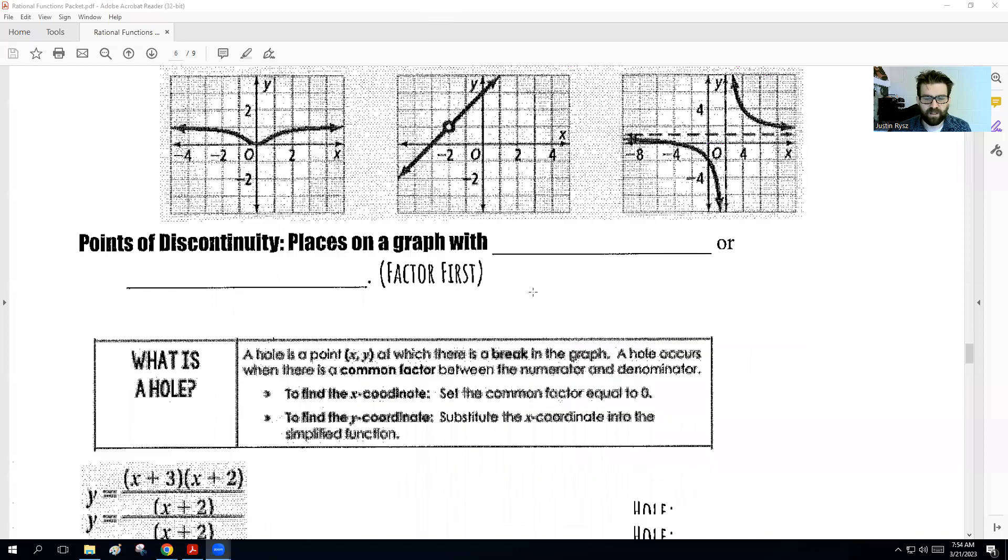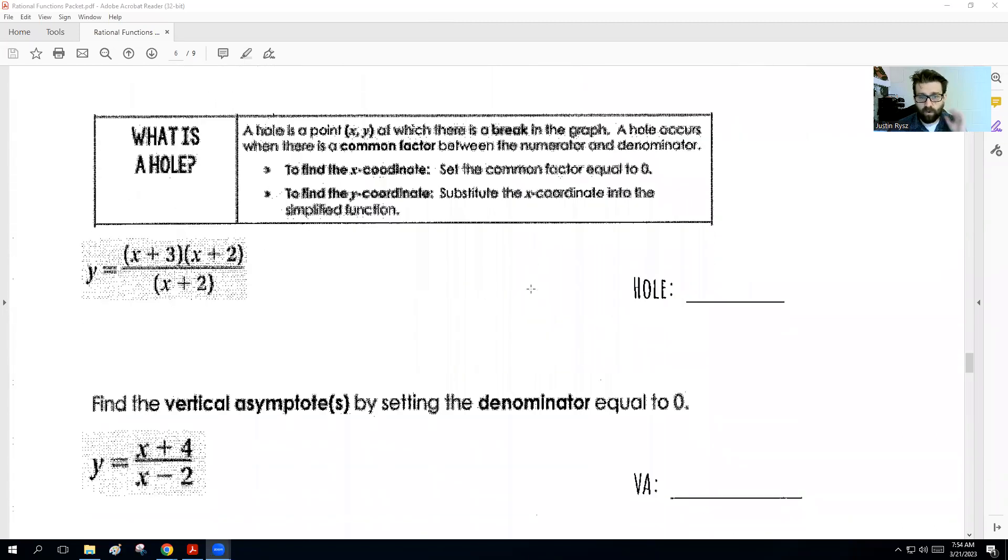So let's first talk about holes and make sure we can identify those. A hole is a point, an x, y point, where there's a break in the graph. So to find a hole here, what we first need to do is to go through and find the x coordinate that makes the denominator equal to 0. So if we look here, if we have the denominator equal to 0, that would be x equals negative 2. Now, we know that it is a hole here when x equals negative 2 because that is a discontinuous point, but it's a discontinuous point that gets canceled out.